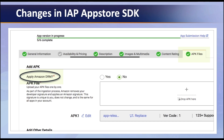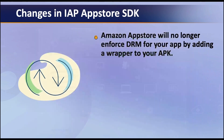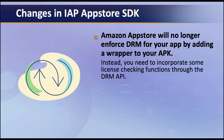With the new App Store SDK, Amazon no longer adds this wrapper around your APK after you submit it. Instead, if you need DRM for your Android app, you need to take some extra steps to incorporate some license checking functions in your app using the DRM API.